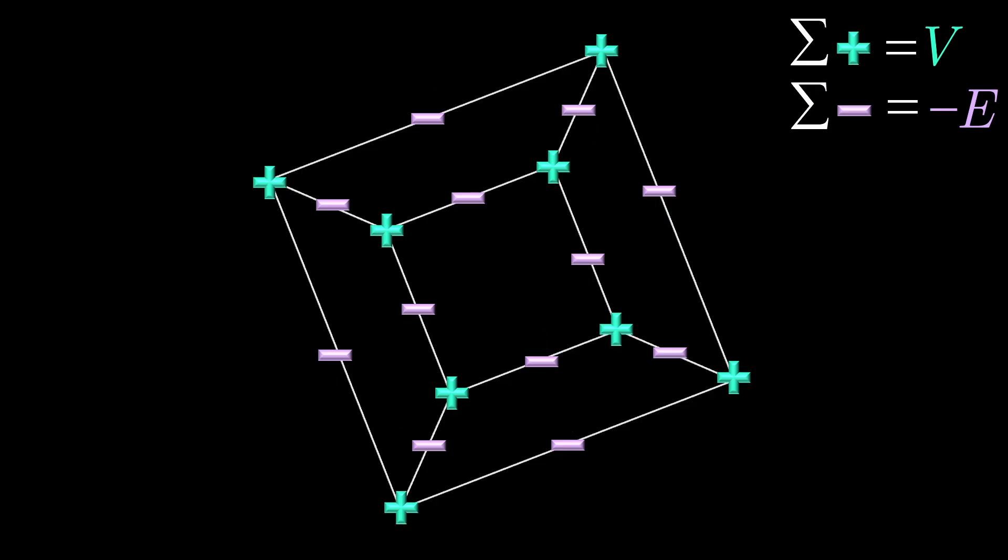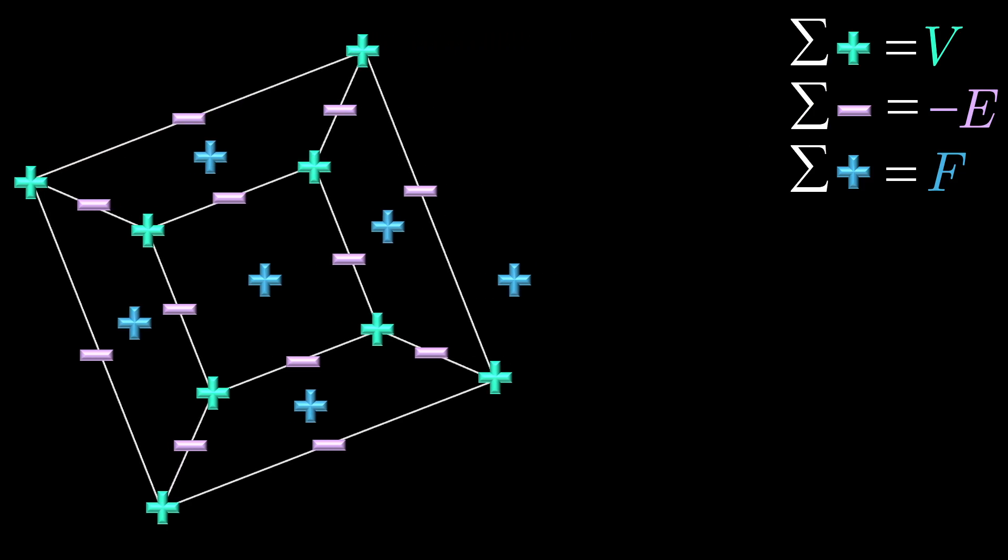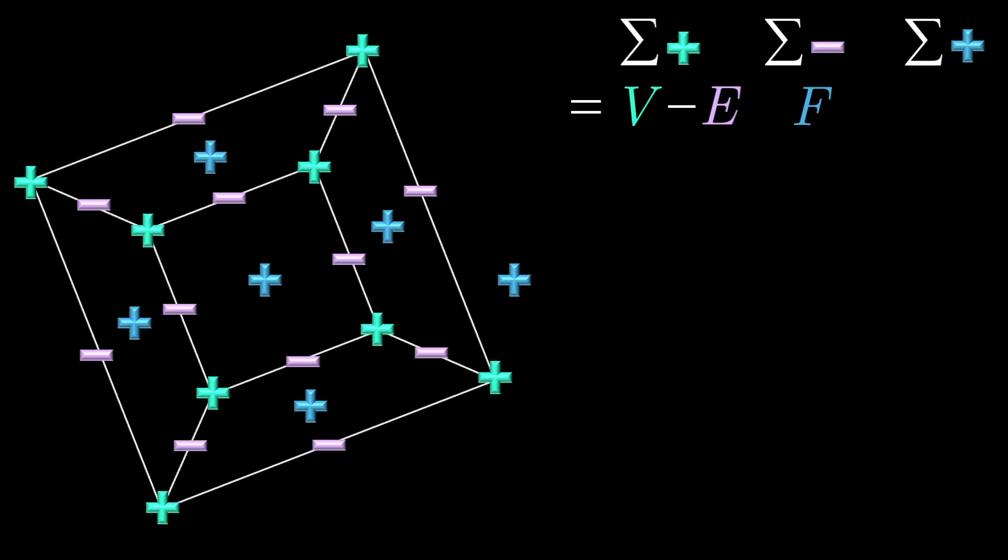Finally, we assign a positive unit charge to each face, including the large outer face. Adding these gives the number of faces, F. Therefore, if we add all of the charges in this diagram, we'd get the value of V - E + F, which we wish to show is 2.